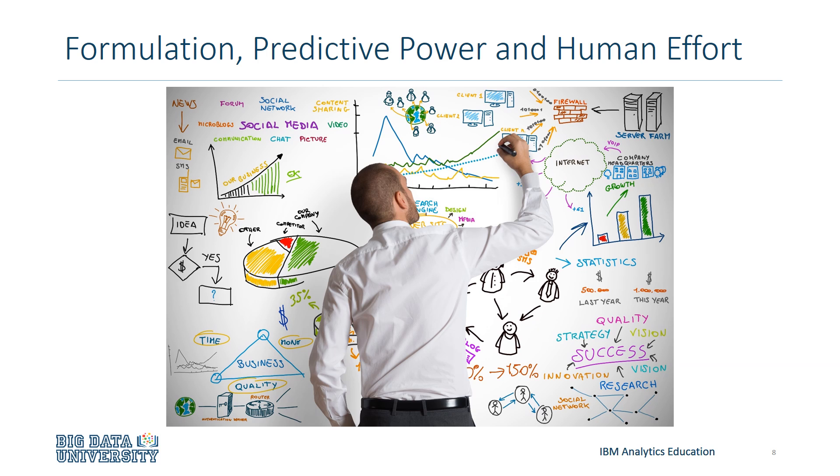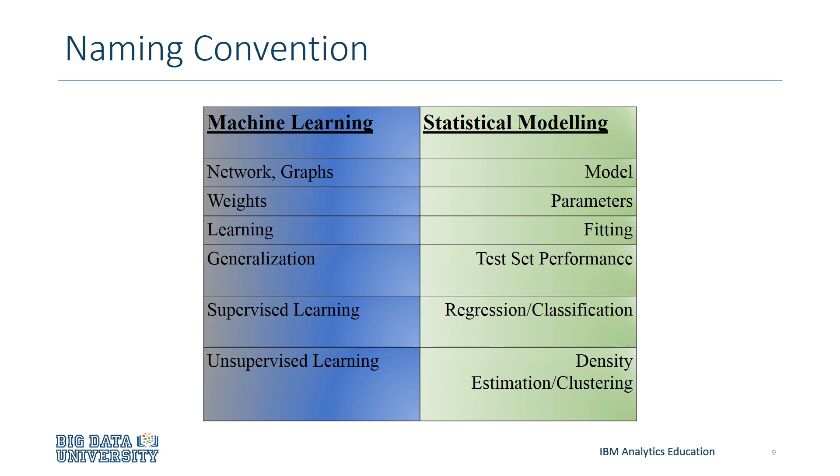In comparison, machine learning requires minimal human effort, as the workload involved in computing is placed squarely on the machine. Furthermore, machine learning has strong predictive power, as the machine is fit and trained to find patterns in the data.